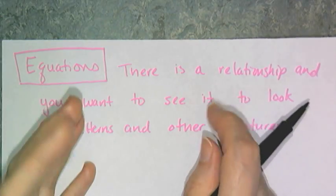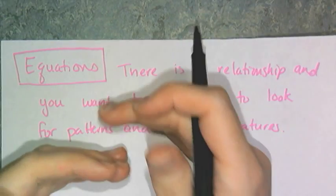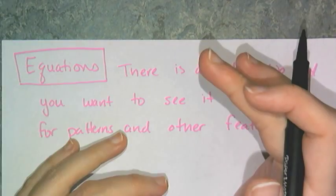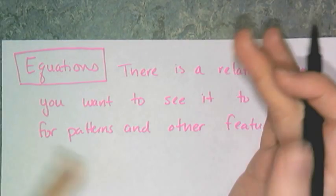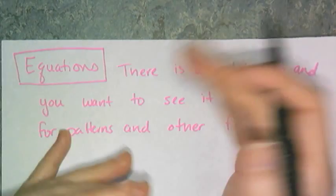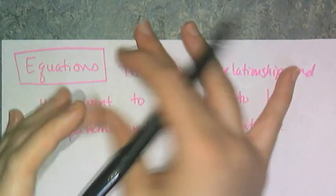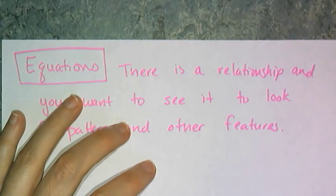And when I say special features, I mean things like maximum values or minimum values, and whether it's increasing or decreasing, and when is it increasing, and when is it decreasing. And so that's why we graph equations, is to study those relationships.